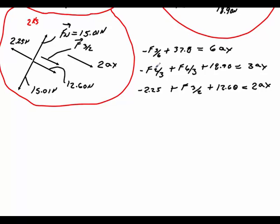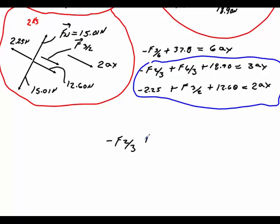What I'm going to do is I'm going to take these bottom two and see if we can combine them because what I'm looking at, when I look at this, what I see is I'm going to try to solve. If I add, actually, if I add these two together, I can eliminate F_3,2 and have an equation of F_6,3. So watch me do this one. I'll take the first equation and I'll put minus F_2,3, plus F_6,3, plus 18.90 is equal to 3ax. Over here, I'm going to put the F_3,2 first.